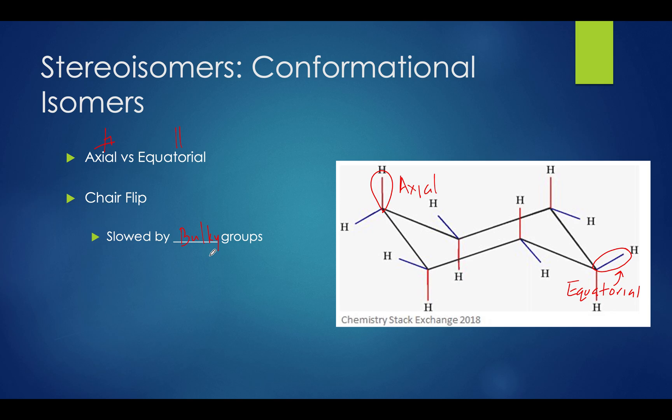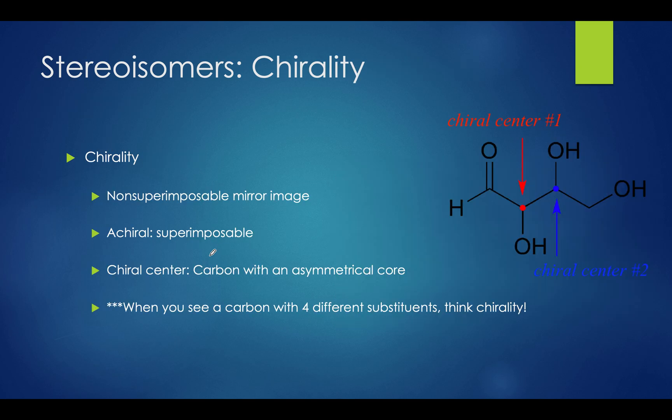On test day, if you see a question asking which chair conformation will be the most preferred, make sure you identify the bulkiest group and see if it's in the equatorial position. We've covered everything we can about conformational isomers, so now let's move on to chirality.